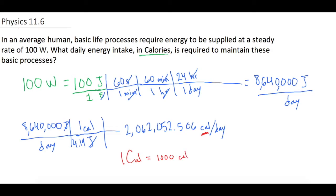So we're not quite done. We know that there's 2,062,052 calories per day. And so, if there are 1,000 calories in one big C calorie, we're essentially dividing this whole thing by 1,000, or same thing, just moving the decimal place over 3. So our final answer then is we have 2,062.1 big C calories per day.